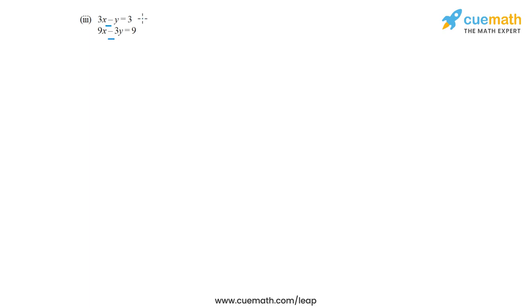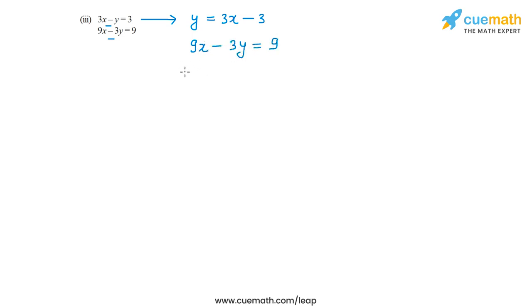Now let's solve the third pair of equations. The third pair is 3x minus y equal to 3 and 9x minus 3y equal to 9. Using the first equation, I can write y in terms of x: y equal to 3x minus 3. Now I will substitute this value of y into the second equation: 9x minus 3y equal to 9. So instead of y, I write 3x minus 3, giving 9x minus 3(3x minus 3) equal to 9.